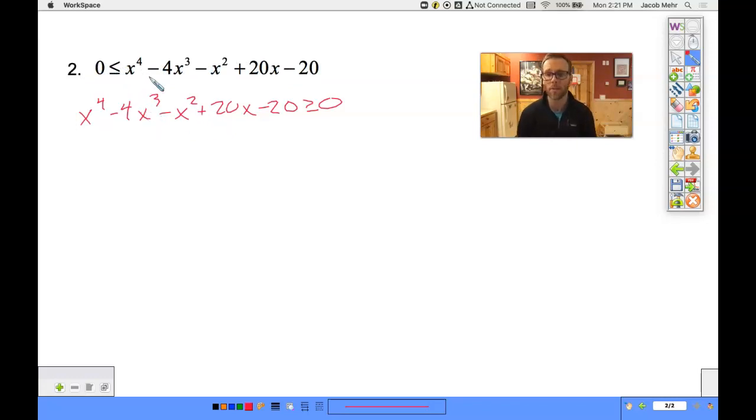So on this one, I do have to make my list of possible rational zeros. And we're talking factors of 20 over factors of 1. So 1, 2, 4, 5, 10, and 20.